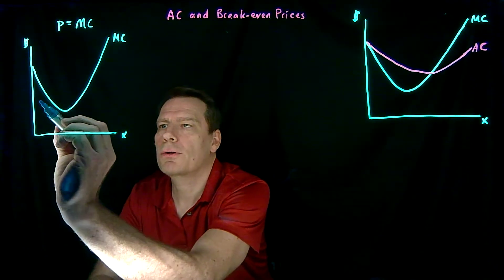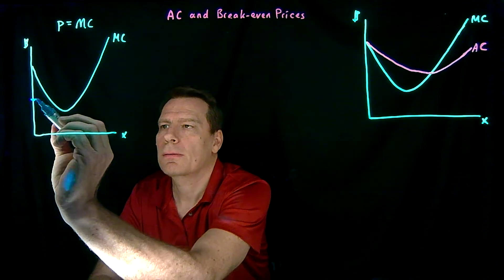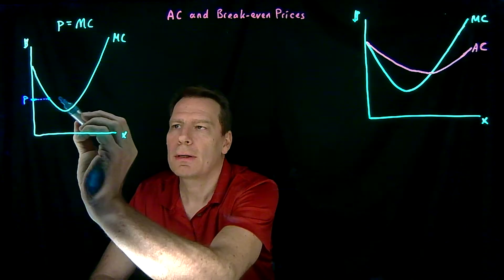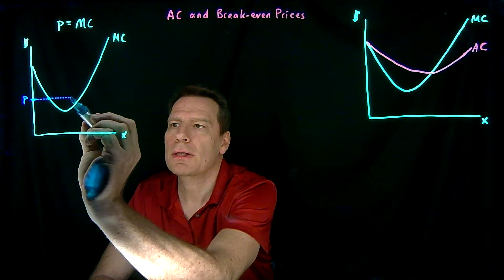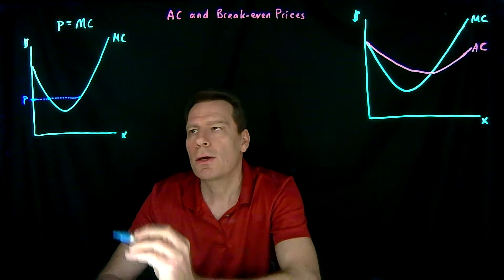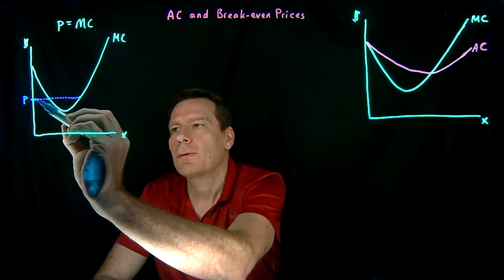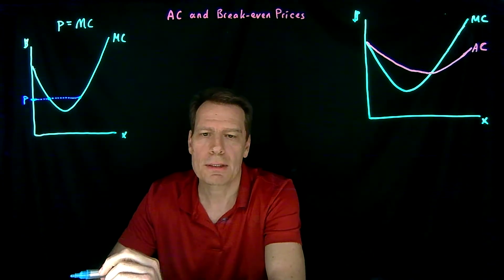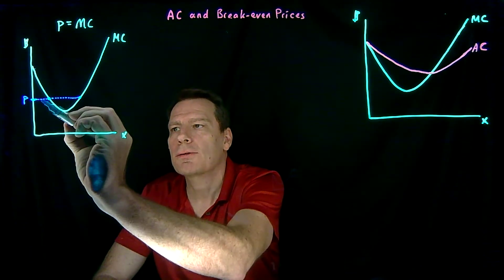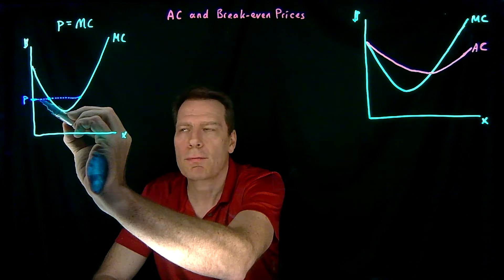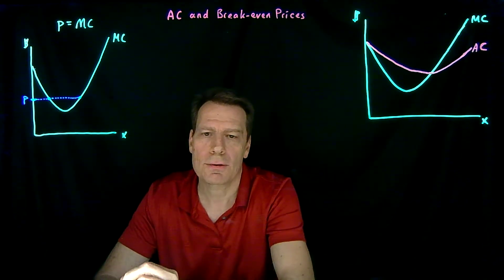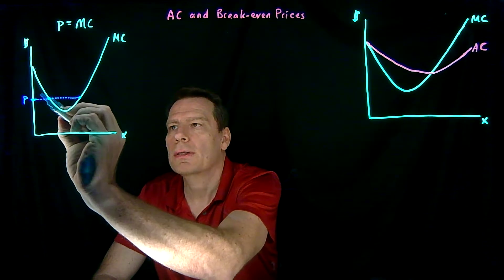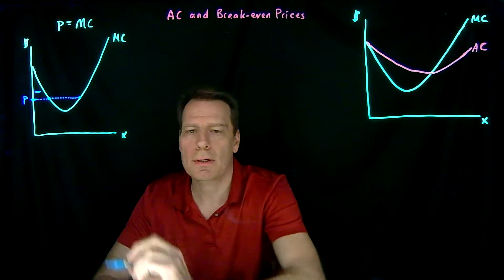At some point, the price falls to a level where we lose money all the way up to a certain point, and then we start making money on additional units beyond that. For the first unit, we make a certain amount in revenue, but it costs us more than that, so we lose money. The same happens for the second unit — additional revenue is less than additional costs. This continues up to a point, creating a negative profit area.